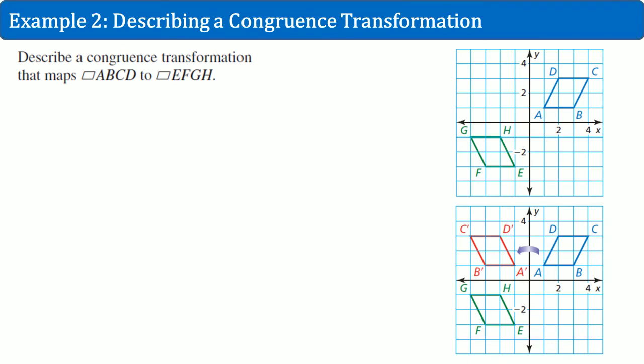Example two. Here, you're going to describe the congruent transformation. So they said here and here, from here to here, these two are going to be the same figure. And remember, it's only the same figure if they have congruent transformations. So what are they?